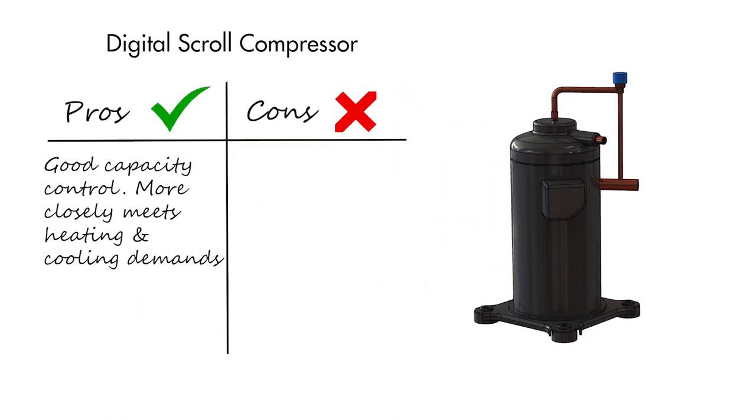Now, on to the not so good side of digital scroll compressors, energy efficiency. To demonstrate why they are not so good in this area, consider the 10% capacity loading sequence again.